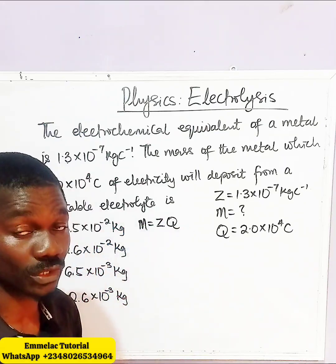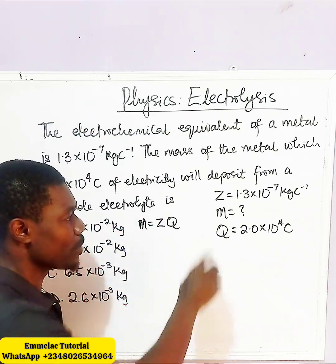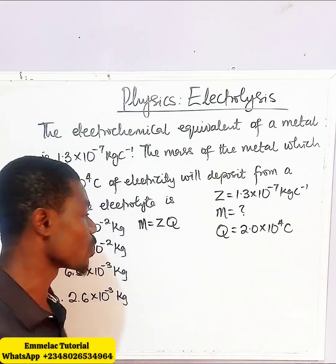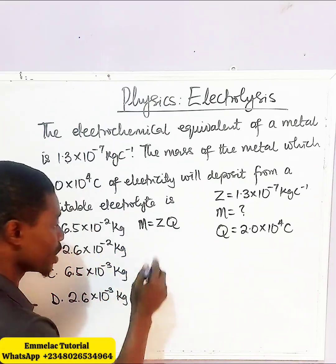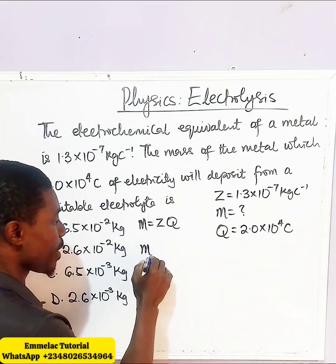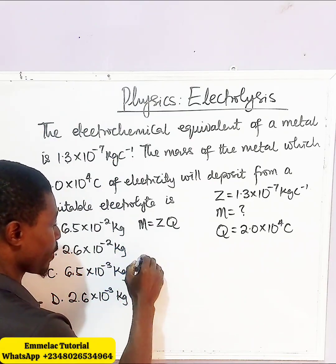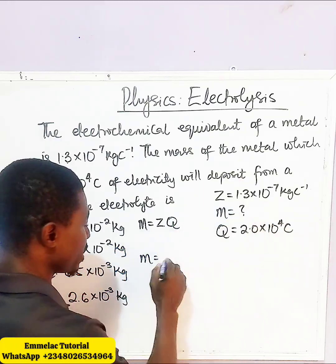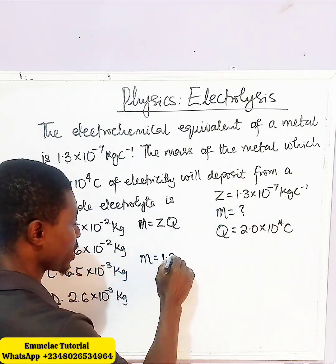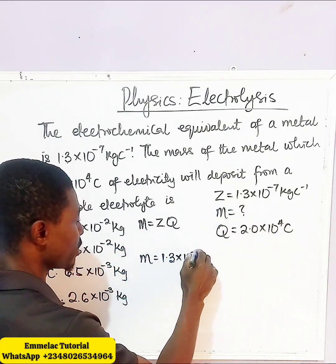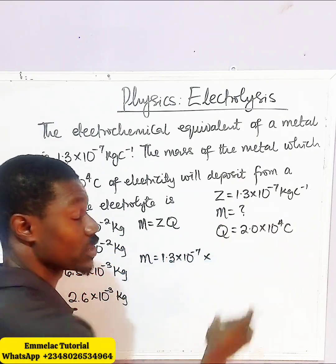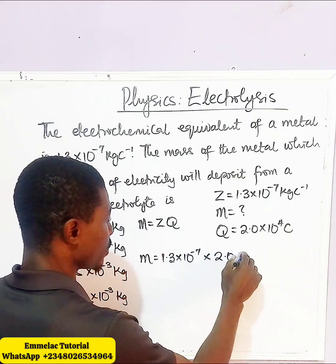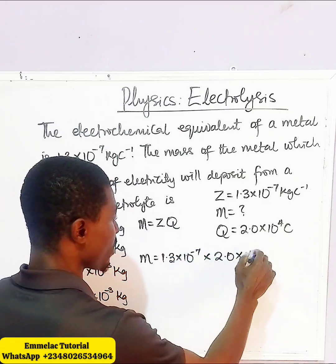The next thing we want to do is plug in the parameters into the given equation. Since we are looking for M, we have M equals Z, which is 1.3 times 10 to the power of minus 7, multiplied by the quantity of electricity 2.0 times 10 to the power of 4.